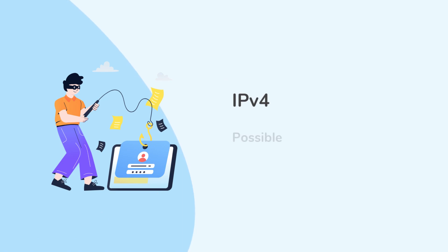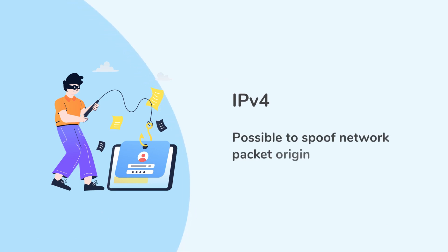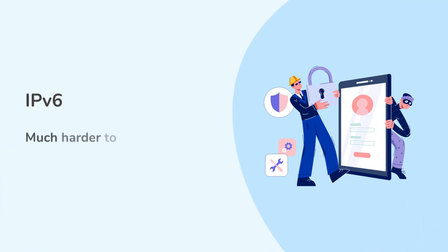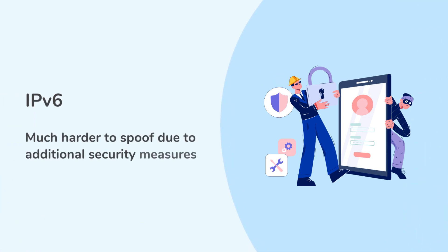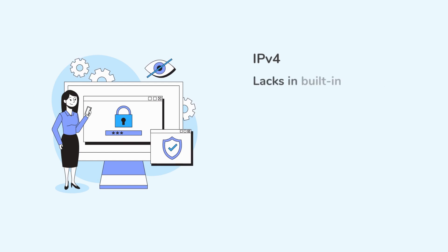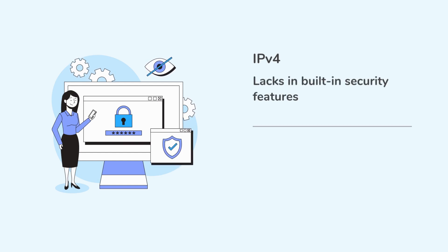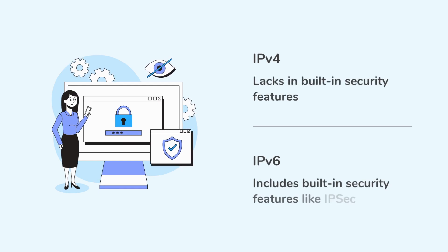It is possible to spoof network packet origin for IPv4, whereas it is much harder to spoof for IPv6 due to additional security measures. IPv4 lacks built-in security features, while IPv6 includes built-in security features like IPsec.